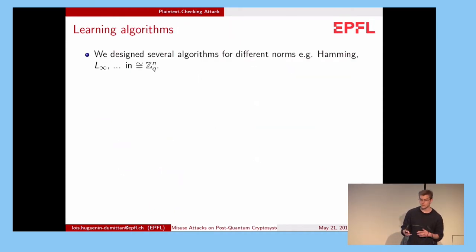Now we designed several learning algorithms for different norms, like the Hamming weight, the L infinity norm, the L1 norm, for example, where we assume we work in ZQ to the N or some isomorphic groups. We can work, for example, with polynomials from a polynomial ring.